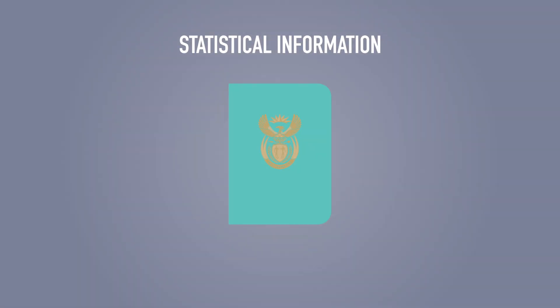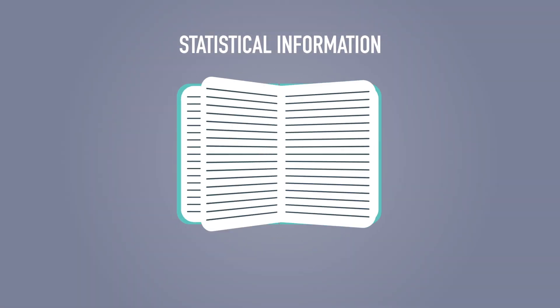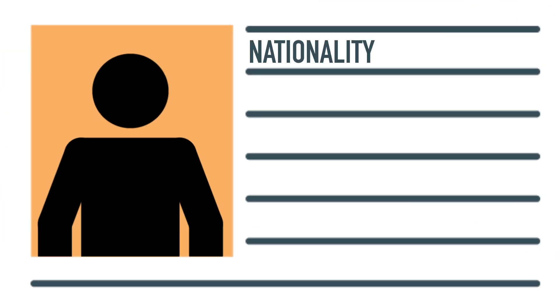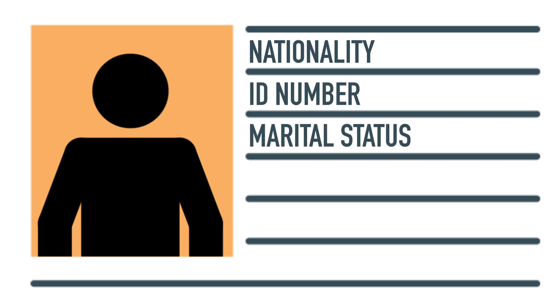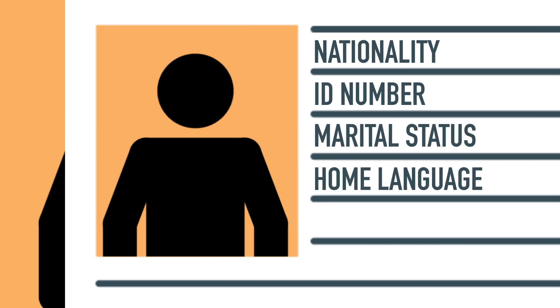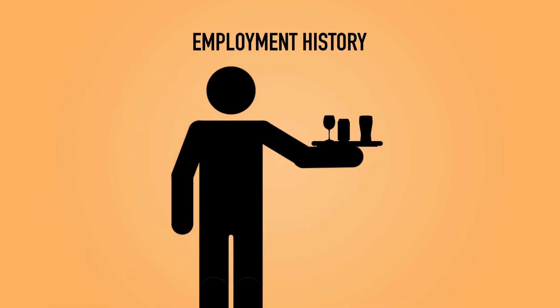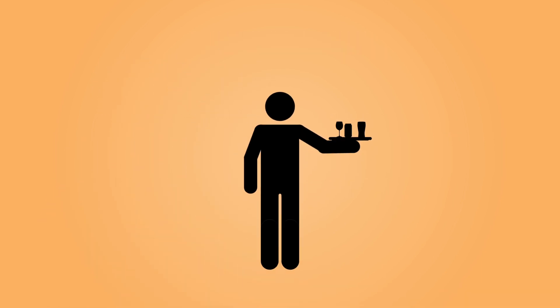Things start getting a little more detailed now. This is where you need to include info such as your nationality, ID number, marital status and home language. Are you working? Have you been working? Select which employment status relates best to you.